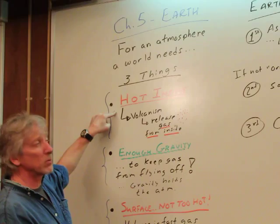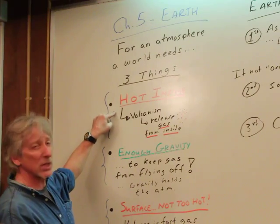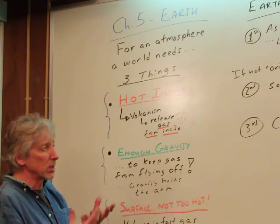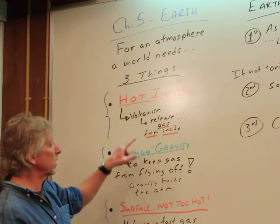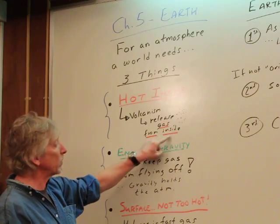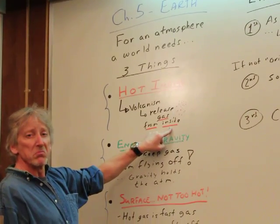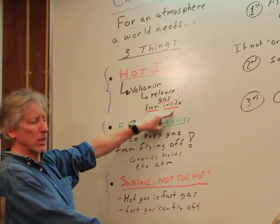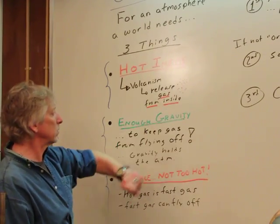It should be hot inside. If it's hot inside, you'll have volcanism. Cracking of the surface, stuff coming up through it, volcanic mountains, releasing gas from the inside. So somehow, this gas here around this world came from inside the planet.